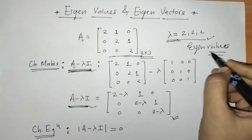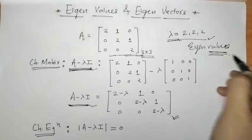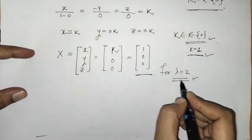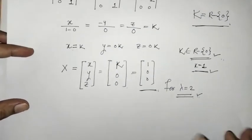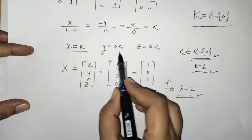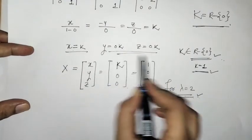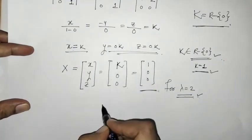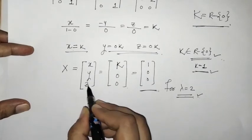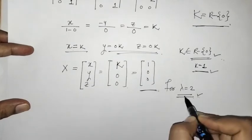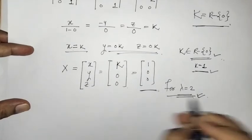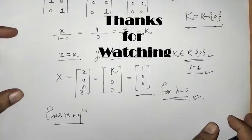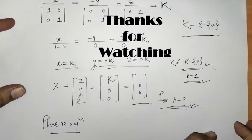For this repeated eigenvalue lambda equals 2, we obtained only one eigenvector because there are no other possible values of x, y, z. So [1, 0, 0] is the only eigenvector for lambda equals 2. Thank you, keep watching.